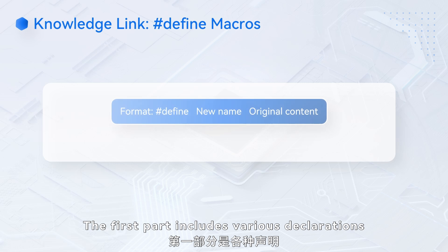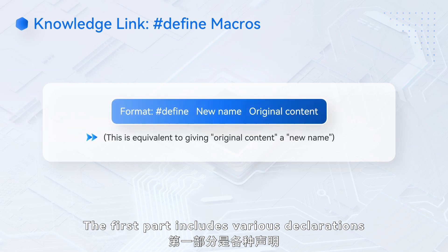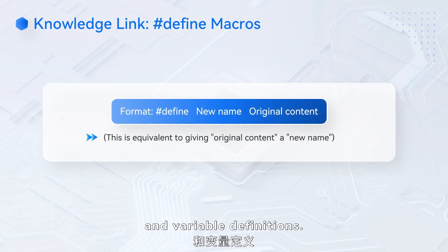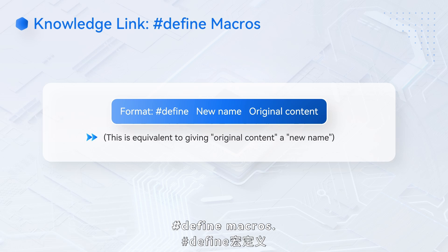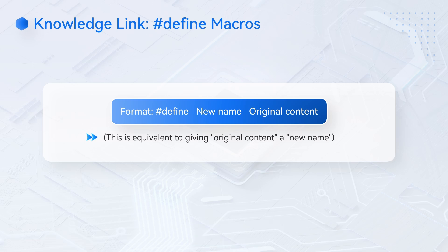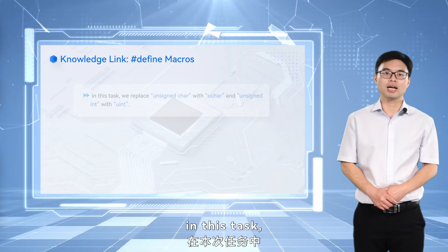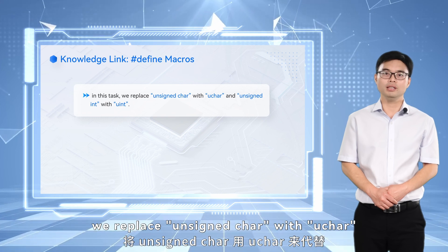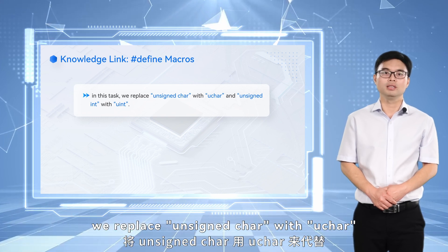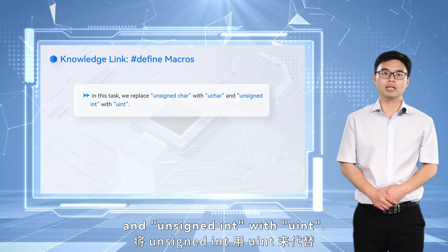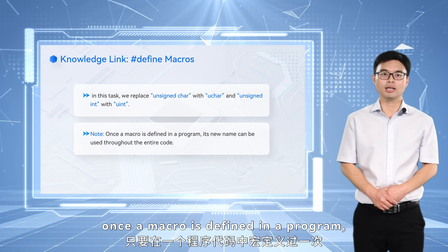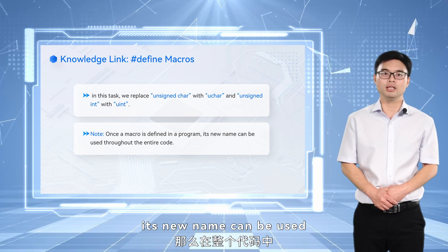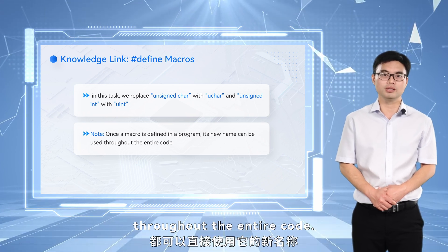The first part includes various declarations and variable definitions. Here we introduce a new concept: #define macros. In this task, we replace unsigned char with ucur and unsigned int with uint. It is important to note that once a macro is defined in a program, its new name can be used throughout the entire code.